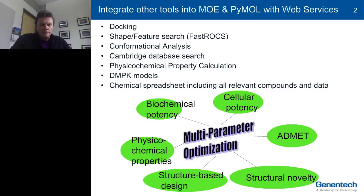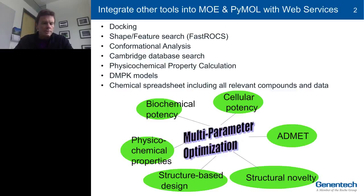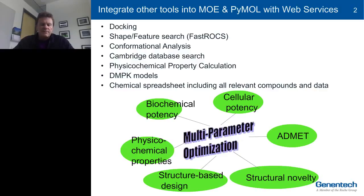Our approach to structure-based design and ligand-based design is hypothesis-driven. We're big on calculated physical chemical properties, which range from pKa to logP to logD, and a variety of other properties. We've also invested heavily in machine learning approaches for more classified in vitro, and in some cases in vivo, DMPK. And we want to put all that into software that makes it easy for non-data specialists — meaning medicinal chemists and other scientists — to actually integrate all those data to help make decisions in this complicated multi-parameter optimization space.